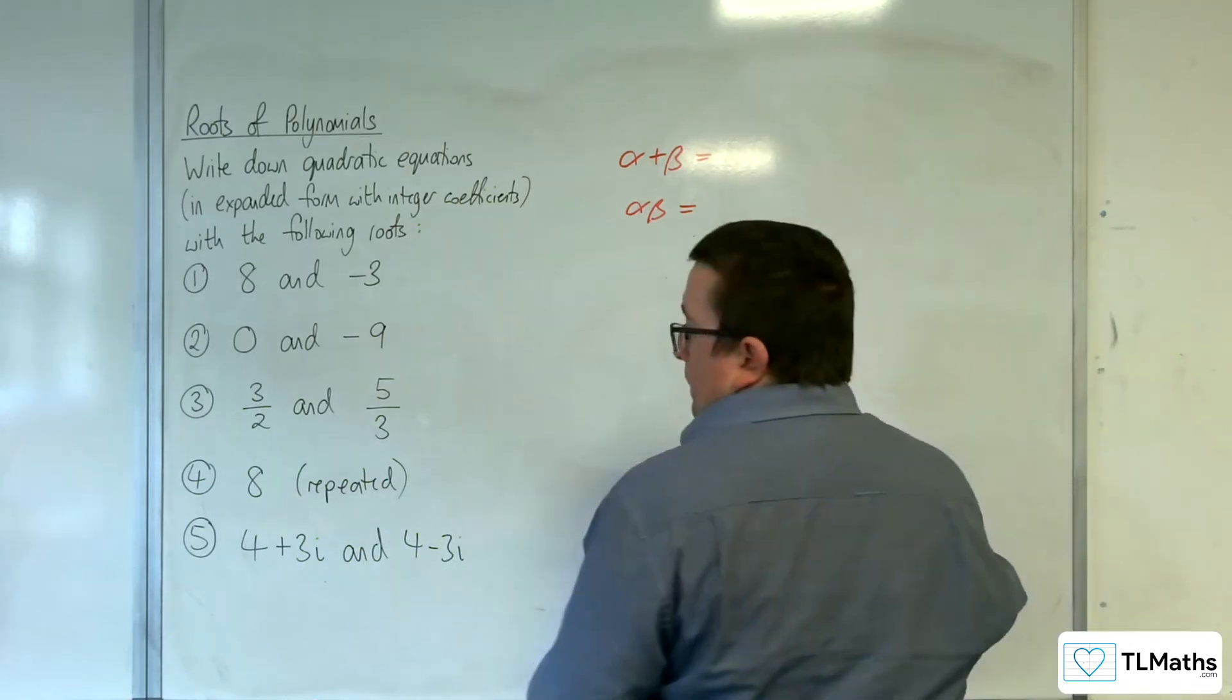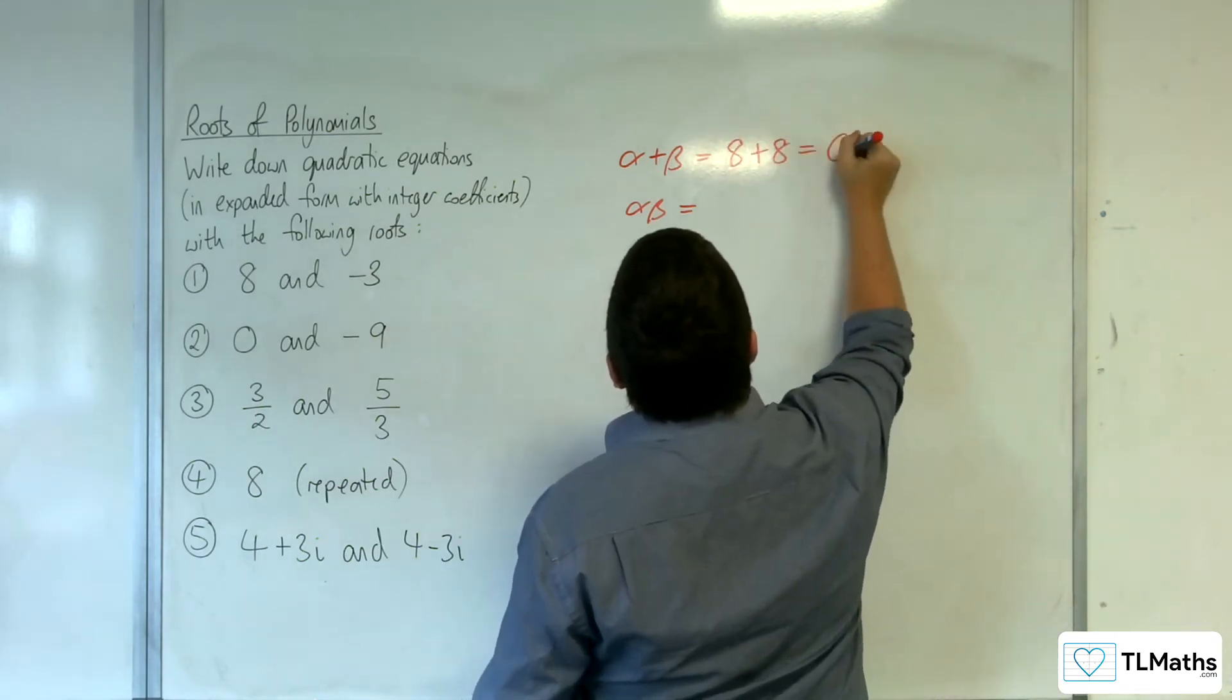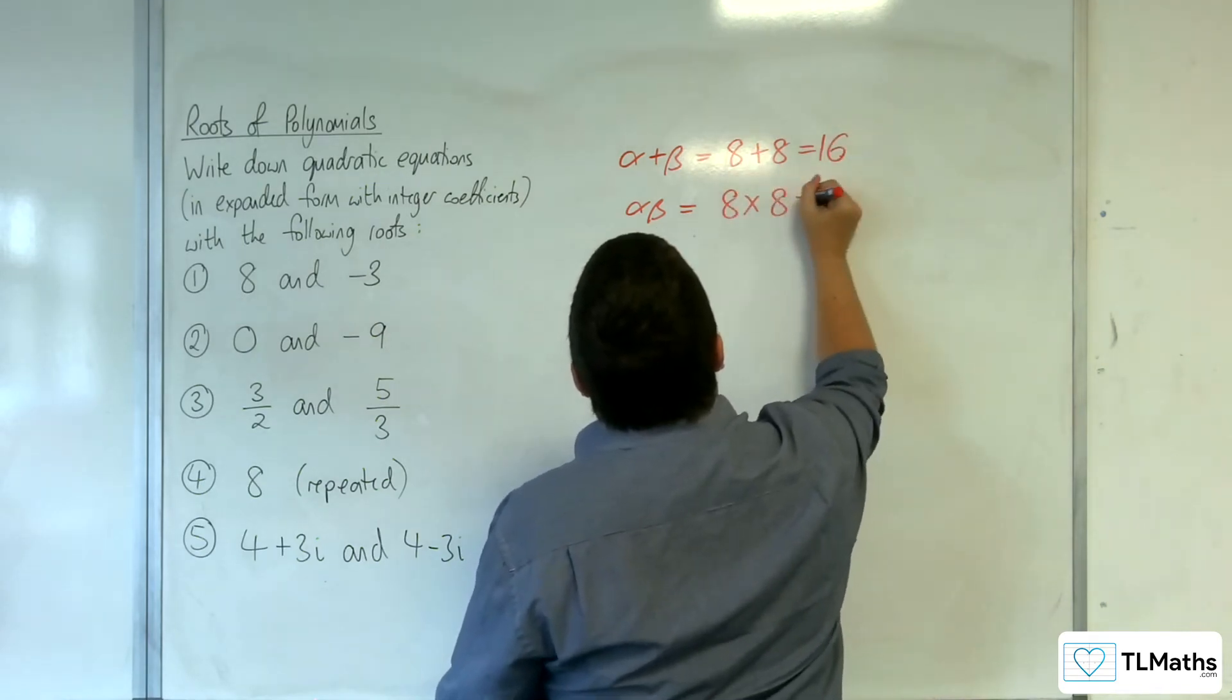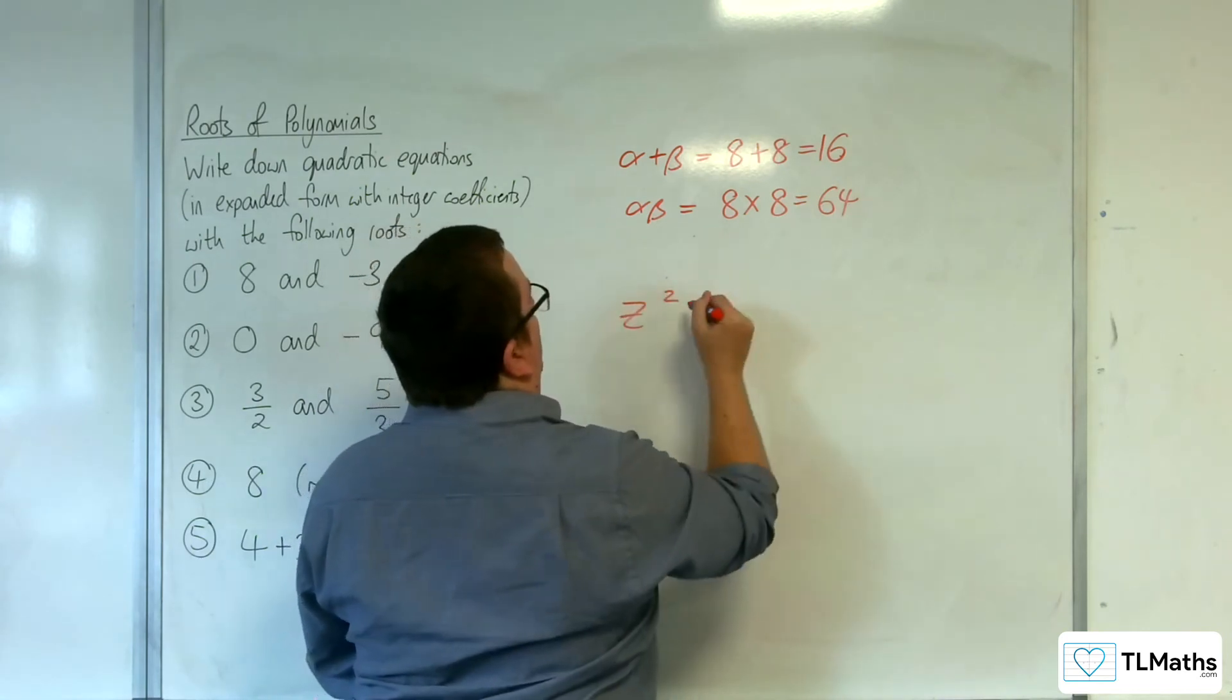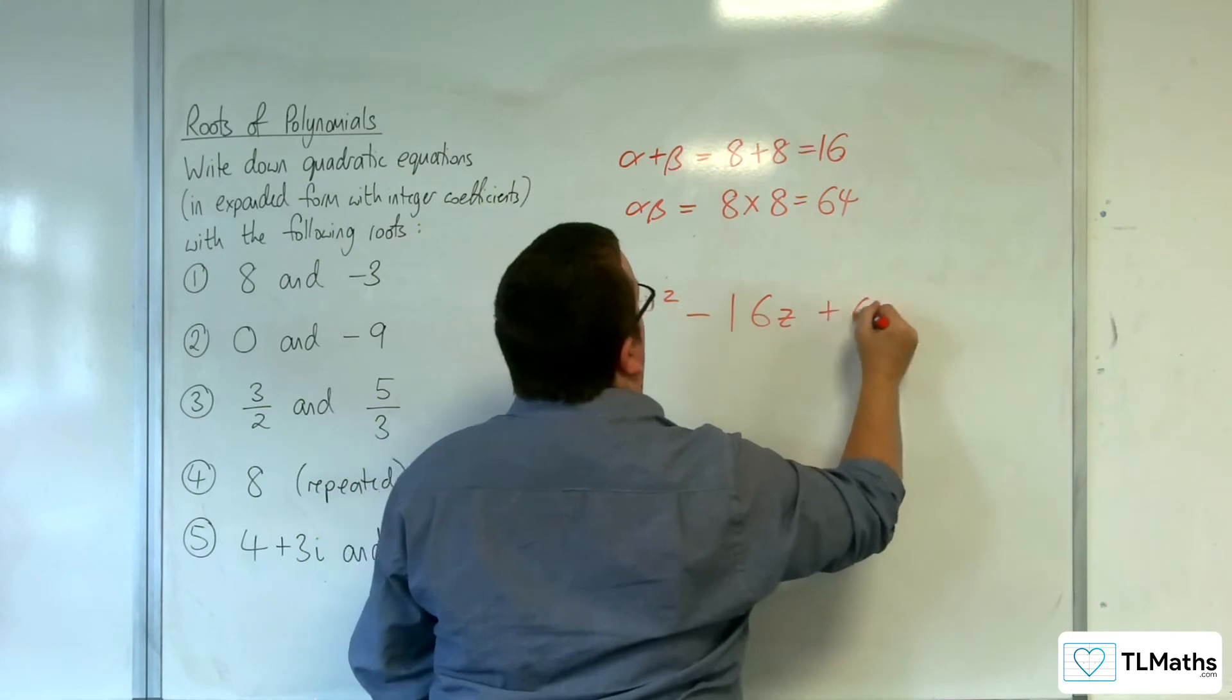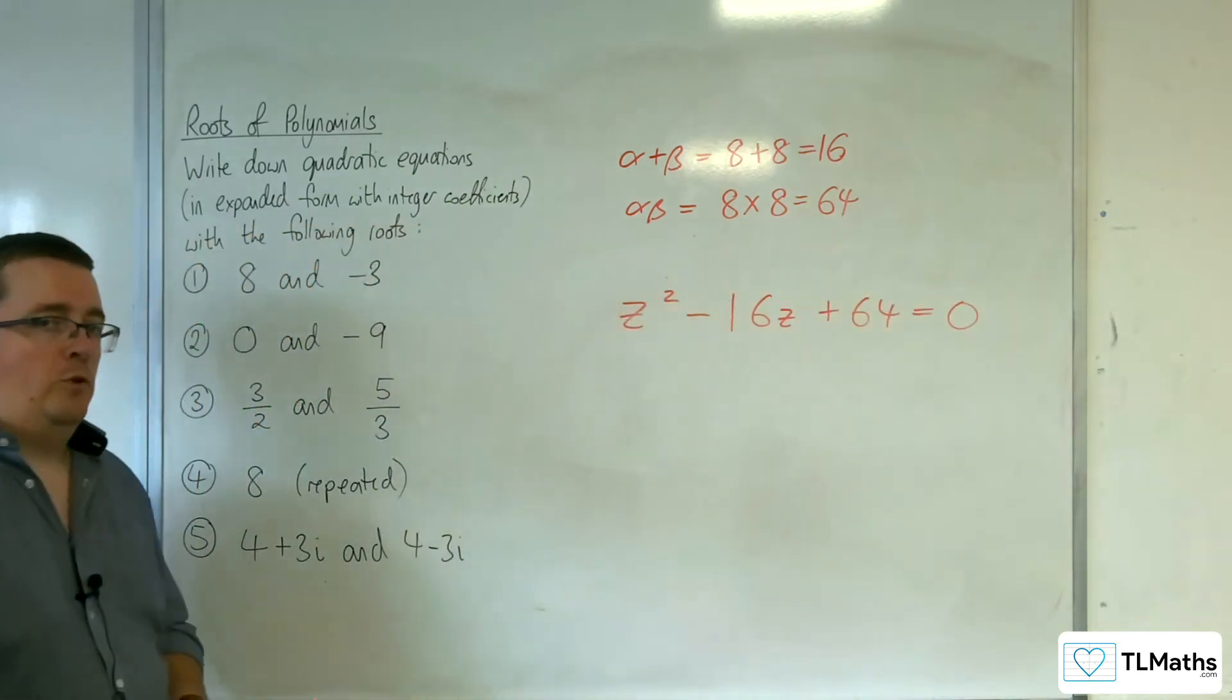Right. Number 4, 8 is repeated, so we've got 8 plus 8, so 16. And then 8 times 8 is 64. So z squared, take away alpha plus beta z, plus alpha beta equals 0. And so that's my quadratic equation.